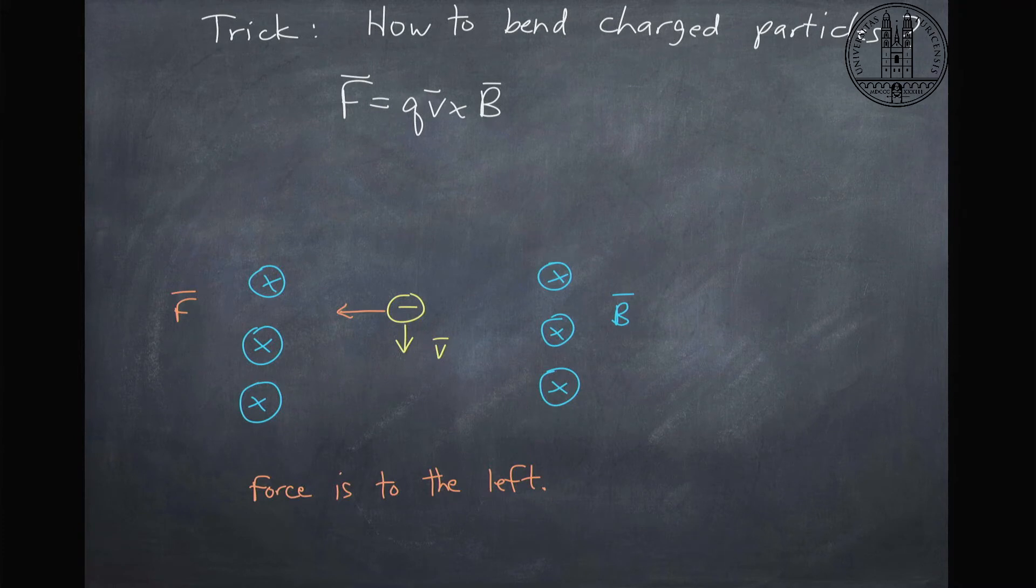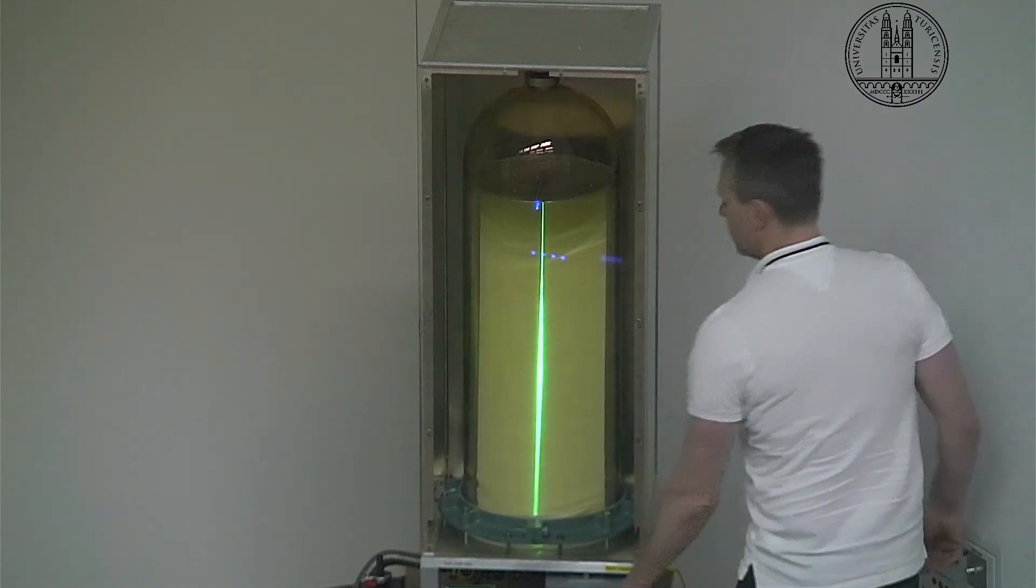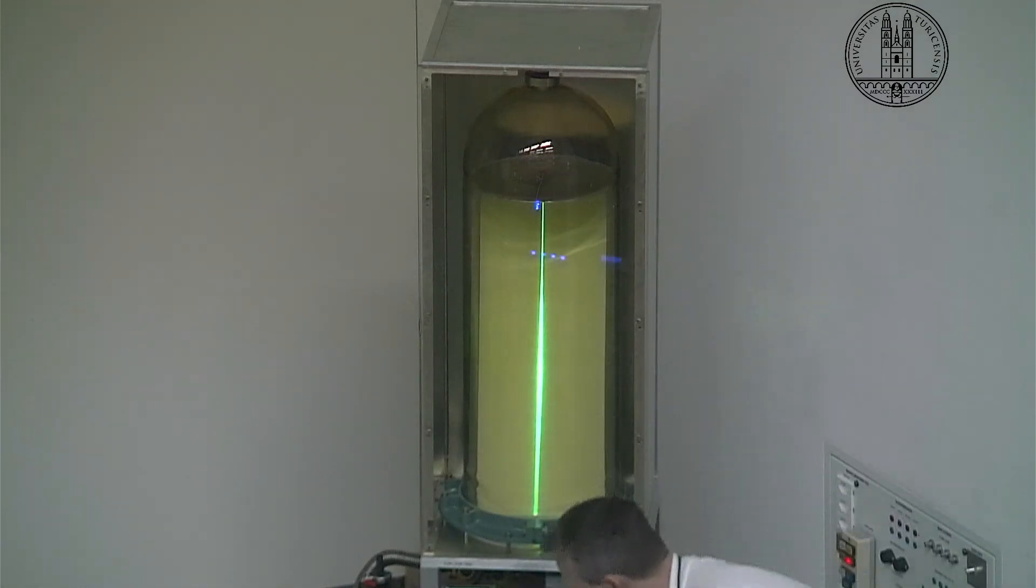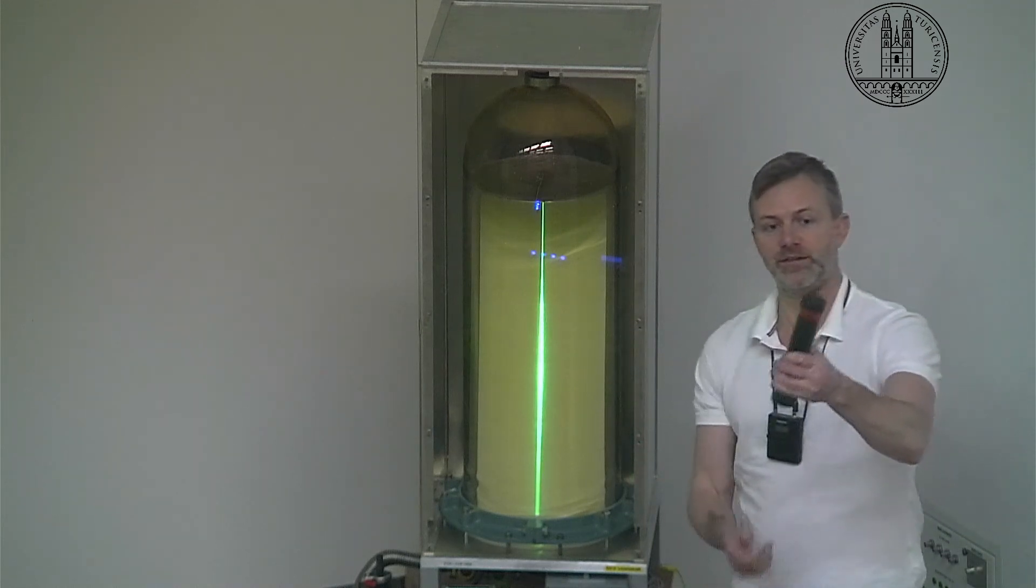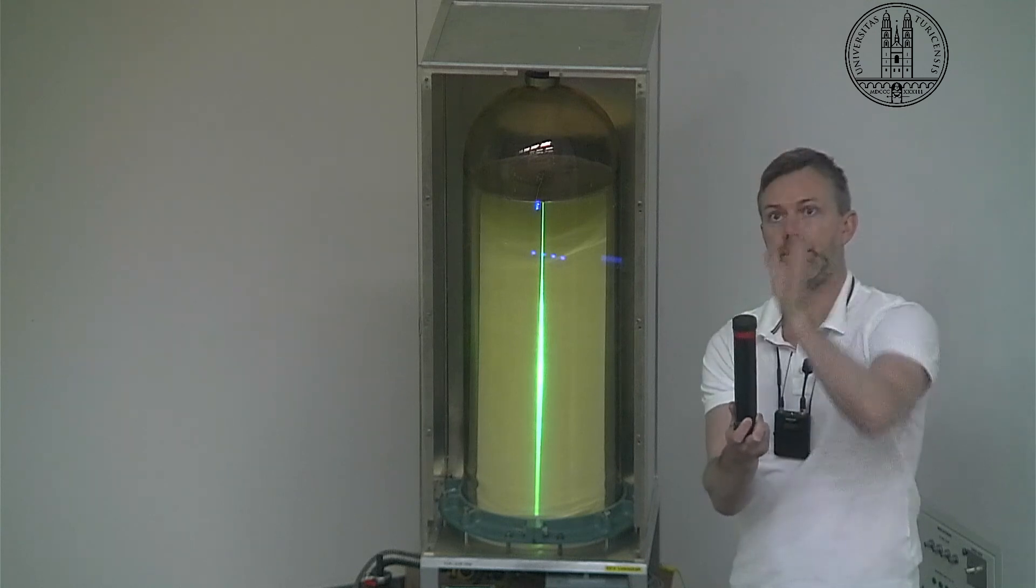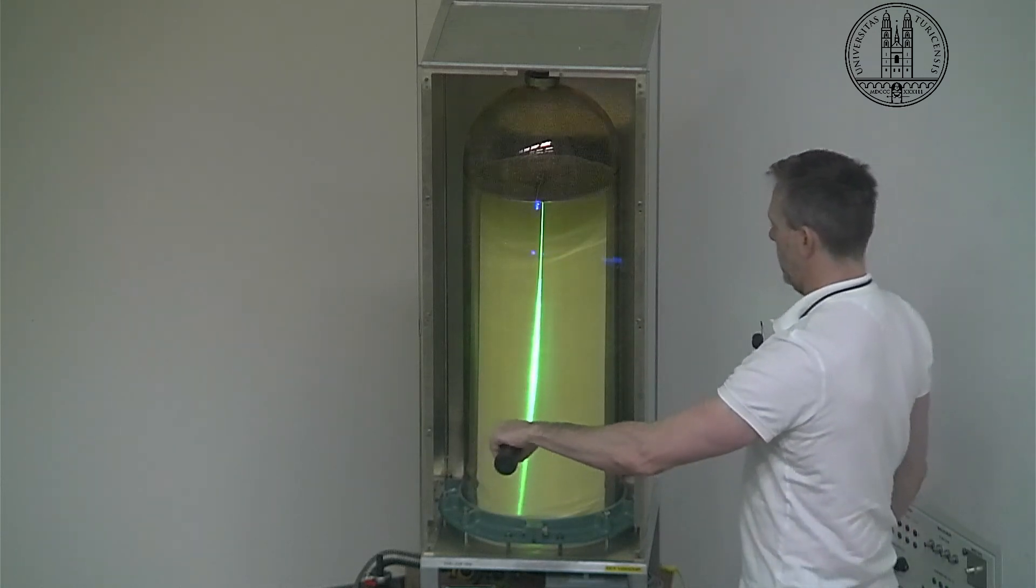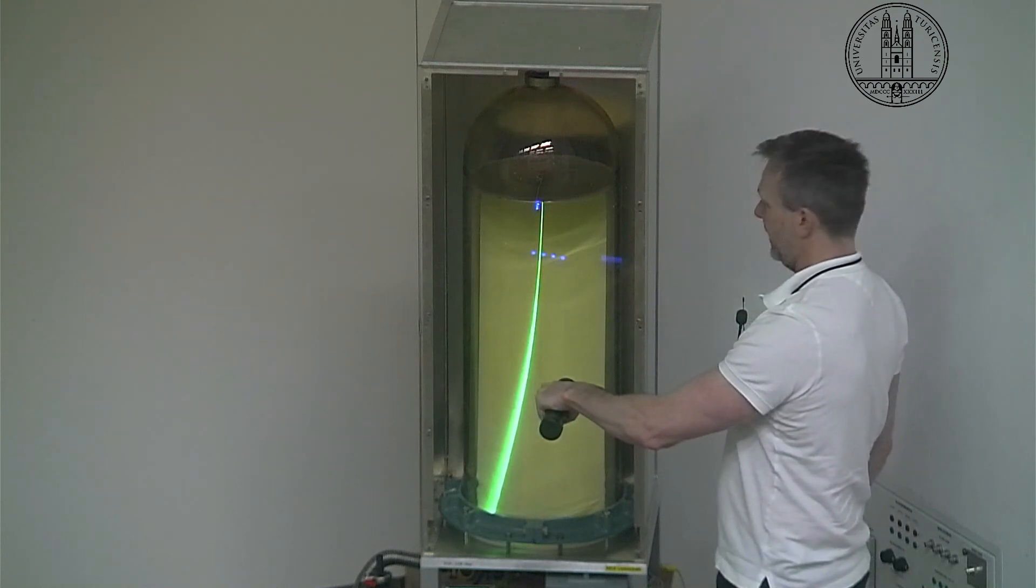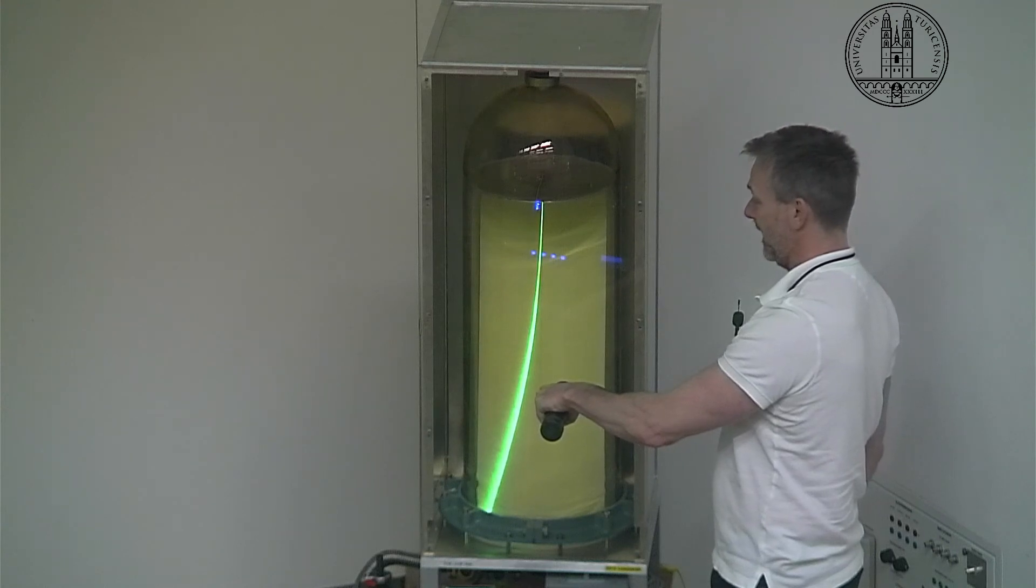So let's go back over and see if we can construct this example. Here's my beam of particles. Here's my magnetic field here. This is a north and a south, so the magnetic field is pointing up. I need to bend it like this. And I put it in and I see that indeed, the force on these electrons is to the left.